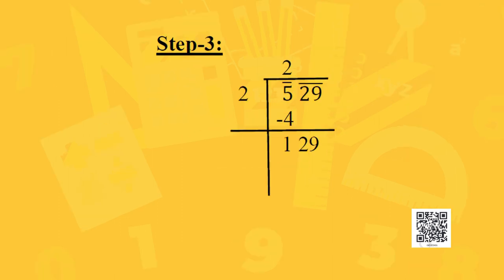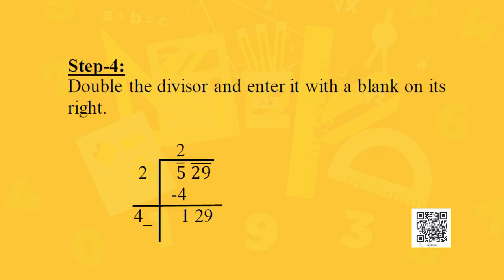In the next step, bring down the number under the next bar, which is 29, to the right of the remainder. So we get a new dividend of 129. Moving to step 4, double the divisor and enter it with a blank on its right. When we double the divisor 2, we get 4, and we place a blank to the right of 4.